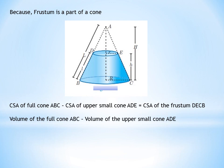Similarly, the volume of the bigger full cone ABC minus the volume of the upper smaller cone ADE gives you the volume of the frustum DECB.